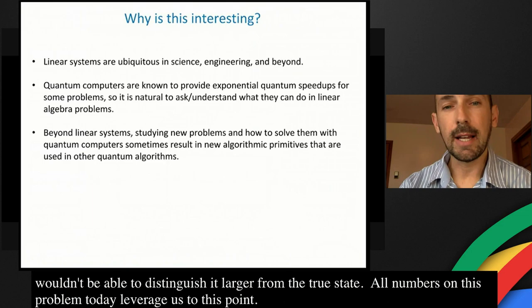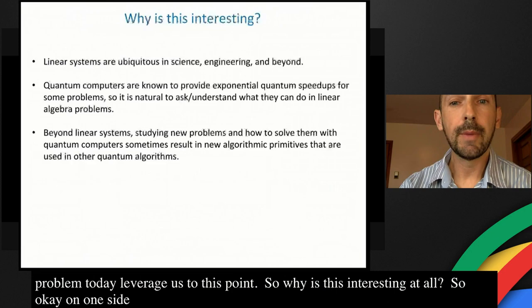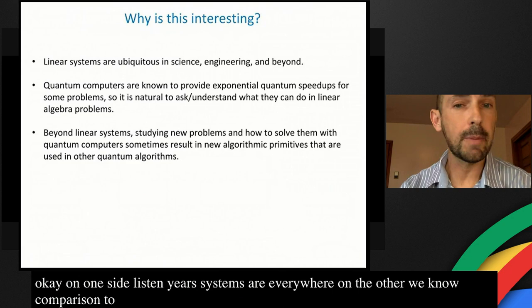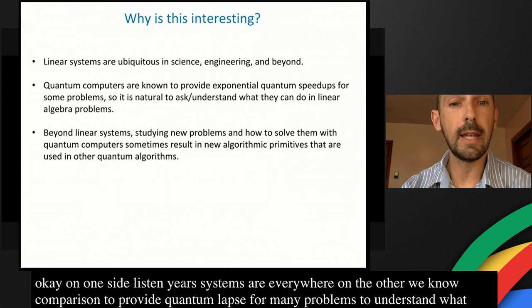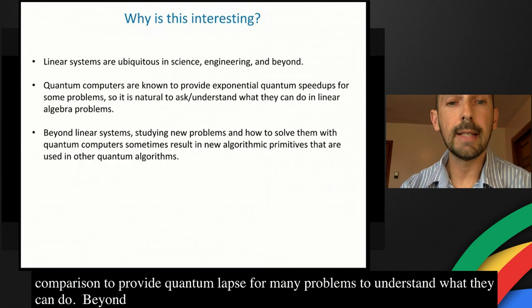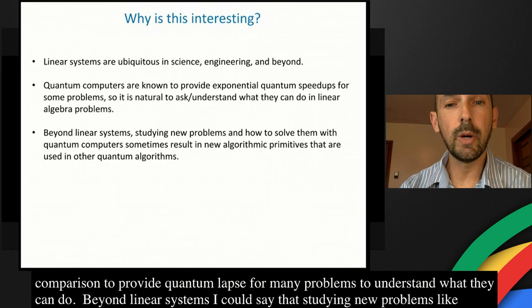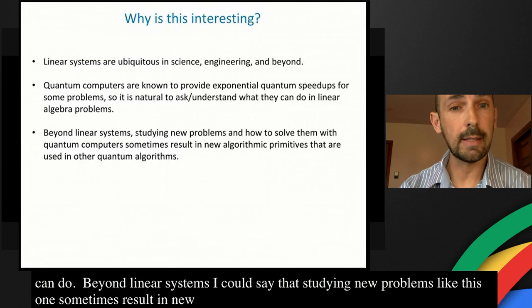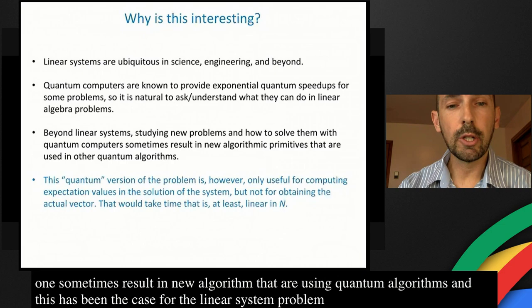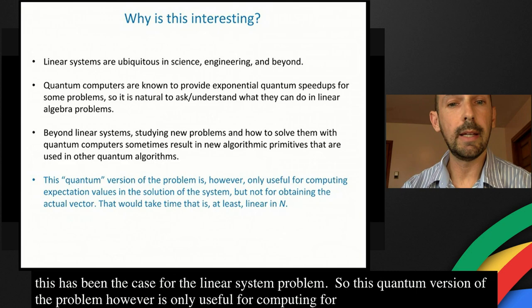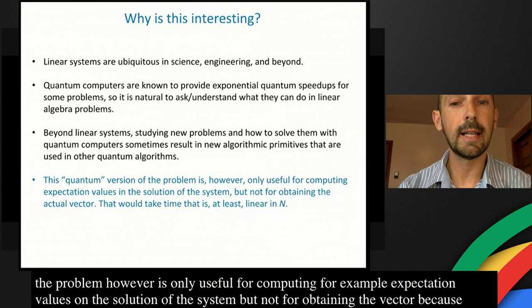Why is this interesting? Linear systems appear everywhere. We know that quantum computers can provide exponential speedups for many problems, so it's natural to understand what they can do for linear algebra. Beyond linear systems, studying new problems like this sometimes results in new algorithmic primitives used in other quantum algorithms — and this has indeed been the case here. However, this quantum version is only useful for computing expectation values on the solution, not for obtaining the full vector, because that would require complexity at least linear in N.